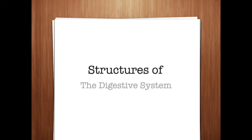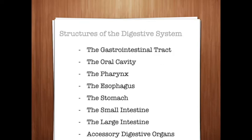The major structures of the digestive system include the oral cavity, the mouth, the pharynx also known as the throat, the esophagus, stomach, small intestine, large intestine, rectum, and anus. Accessory organs related to the digestive system include the liver, gallbladder, and pancreas.